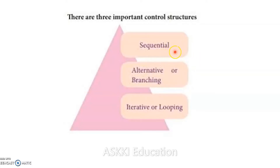The first one is sequential. The second one is alternative or branching. And the third one is iterative or looping. The branching and looping details are covered in this video.